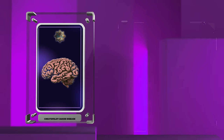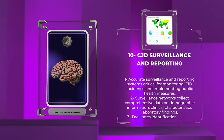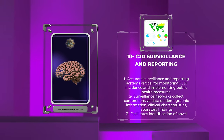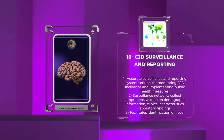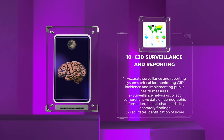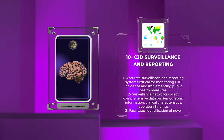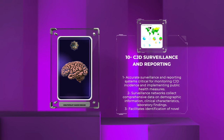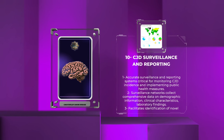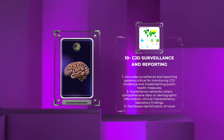Given the rarity of CJD, accurate surveillance and reporting systems are critical for monitoring disease incidence, identifying outbreaks, and implementing appropriate public health measures. National and international surveillance networks collaborate to collect comprehensive data on CJD cases, including demographic information, clinical characteristics, and laboratory findings. Surveillance also facilitates the timely identification of novel prion strains or atypical presentations, highlighting the dynamic nature of this disease.